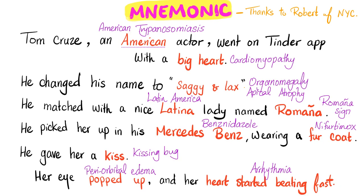And here are your answers. Tom Cruise — because this is Trypanosoma cruzi. American — American trypanosomiasis. Big heart — cardiomyopathy, cardiomegaly, etc. Saggy and Lax — this refers to the organomegaly or the atrophy at the apex of the heart.